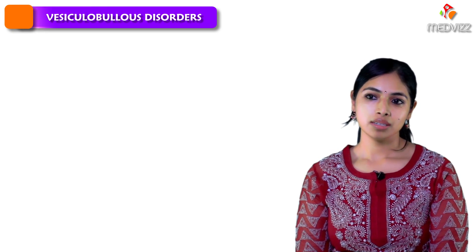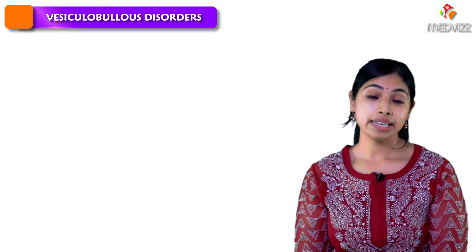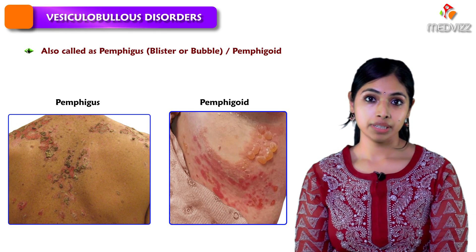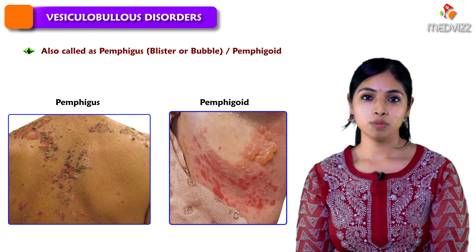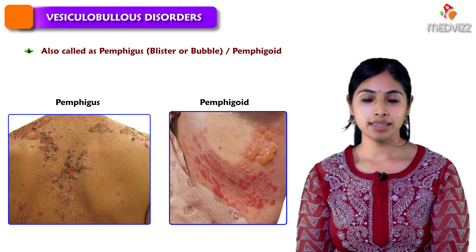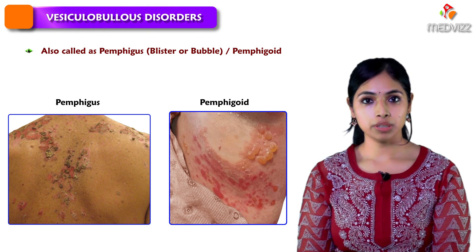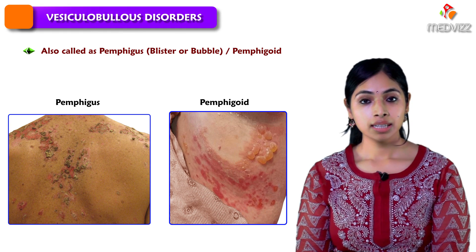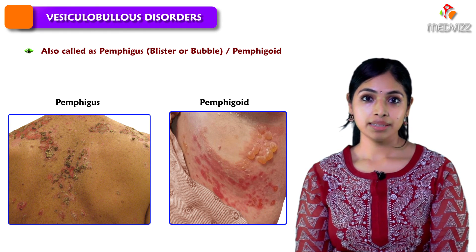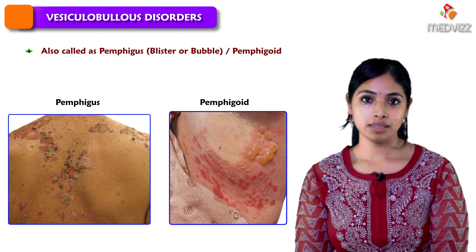Vesiculobullous disorders — another name for them is Pemphigus or Pemphigoid. Pemphigus is a word actually derived from the Greek word 'Pemphix,' which basically means a blister or a bubble.